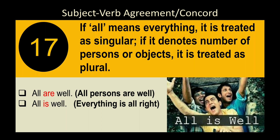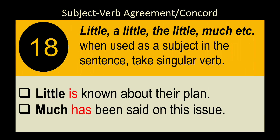Rule 19: If 'all' means 'everything,' it is treated as singular. If it denotes a number of persons or objects, it is treated as plural. Example: 'All is well' means everything is all right. 'All are well' refers to persons being well. Context determines which meaning applies — keep this distinction in mind.